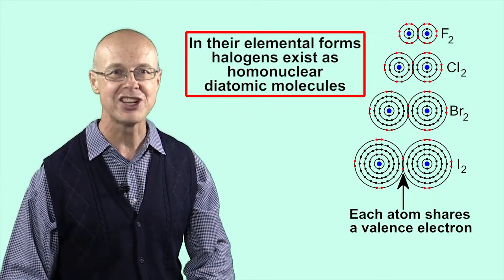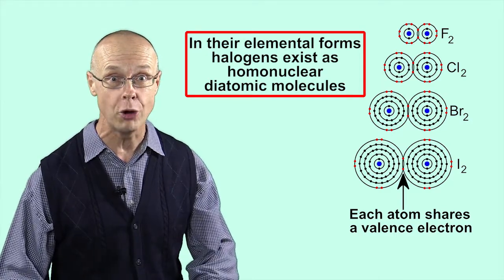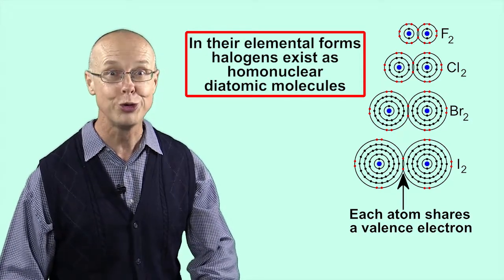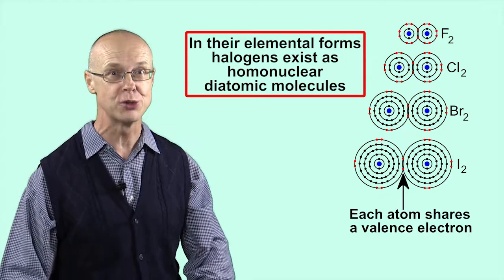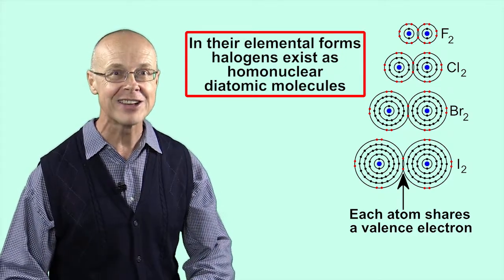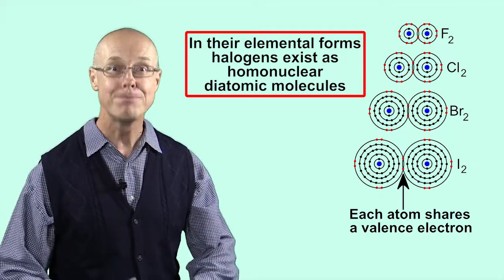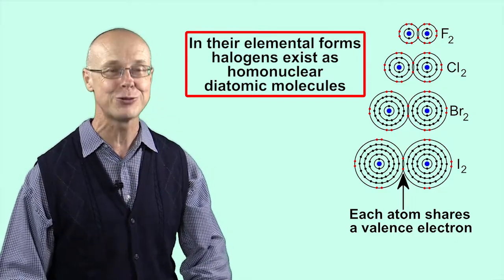This explains why halogens exist in their elemental forms as homonuclear diatomic molecules. By sharing a valence electron with another atom of the same element, both atoms satisfy the octet rule.